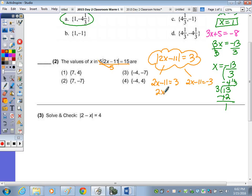When I add 11 over, I get 2x equals 14. Divided by 2, and x is 7. Add the 11 over here, we get 2x equals 8. Divided by 2, and x is 4. So 7 and 4 are the correct answer choices, which is choice 1.